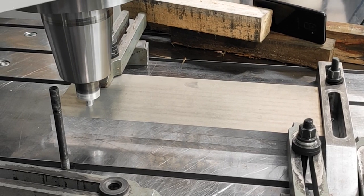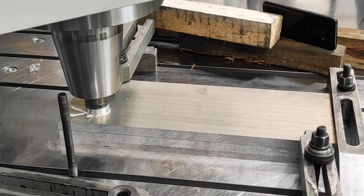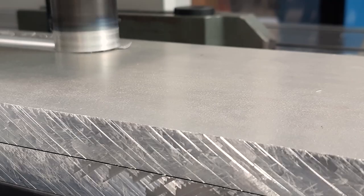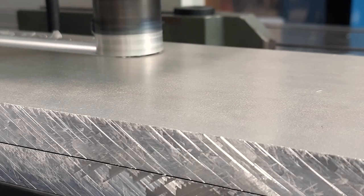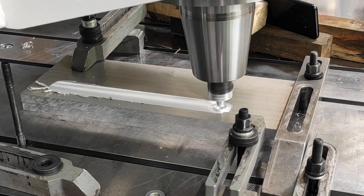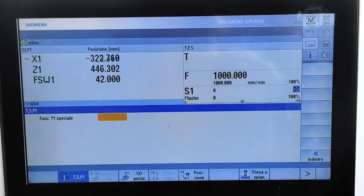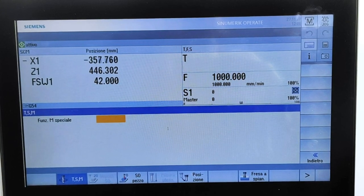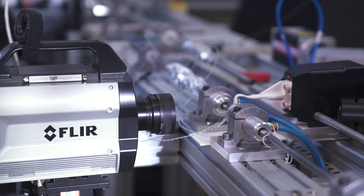Friction stir welding with a high load capacity, 100 kN vertical force, 600 Nm torque and CNC control and high precision sensors to manage the welding parameters in real time.